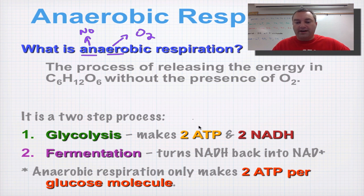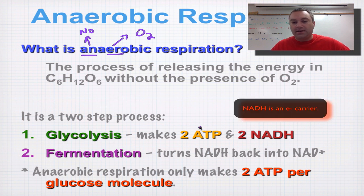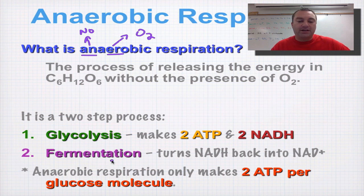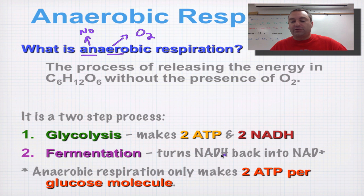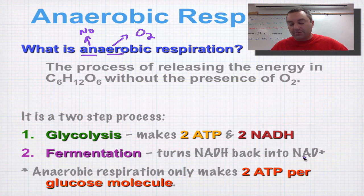In glycolysis you have a net gain of 2 ATP and you're going to produce 2 NADH. The second step is called fermentation, and there are two types. Fermentation's sole purpose is to turn NADH back into NAD+. If oxygen was available, the electron transport chain would take care of this for us, but with no oxygen available we need to regenerate NAD+.